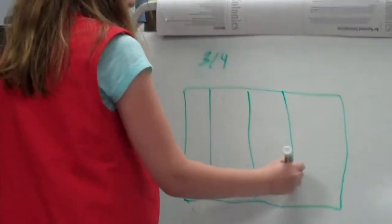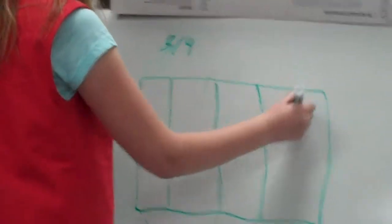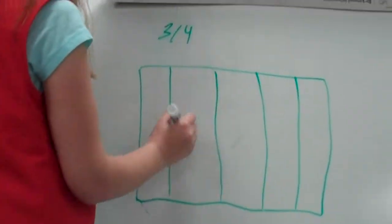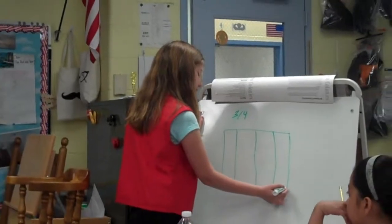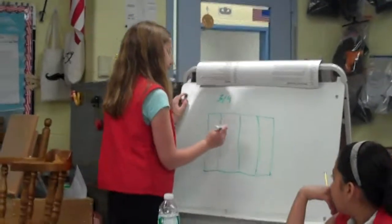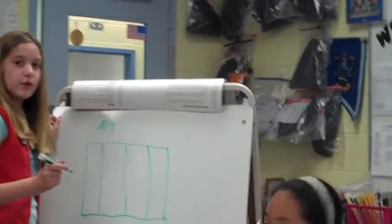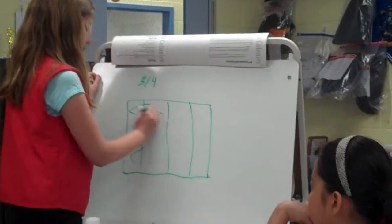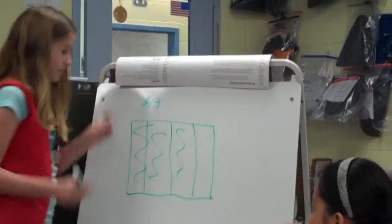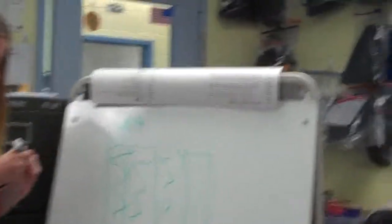Oh, so we have a rectangle. What happened to our rectangle? It's five — it was five. Yeah. One, two, three. That's only four. Yeah, three-fourths. Okay. One, two, three. Three out of four. Alright, alright.